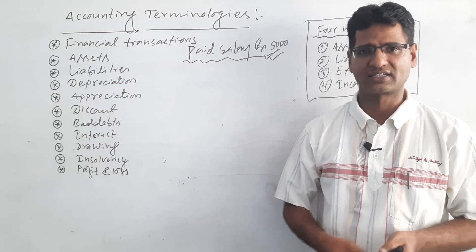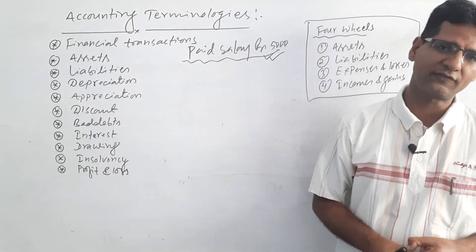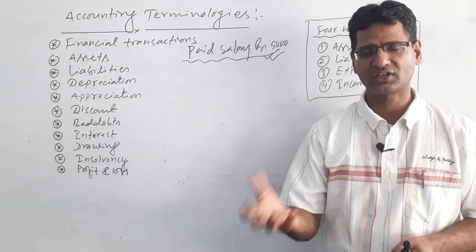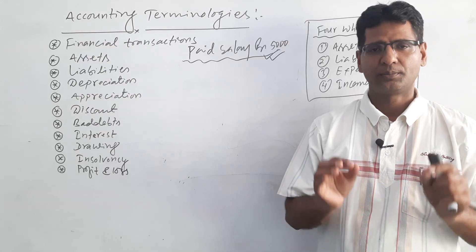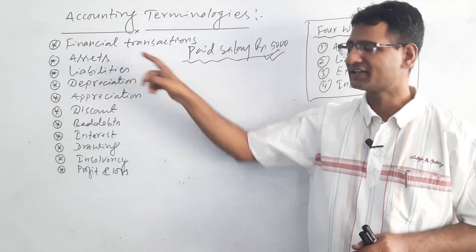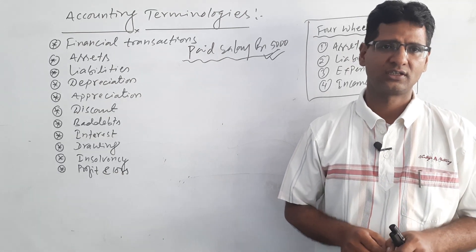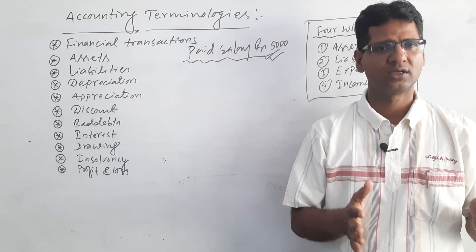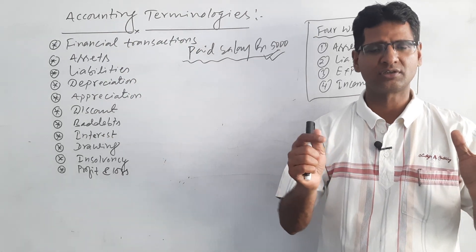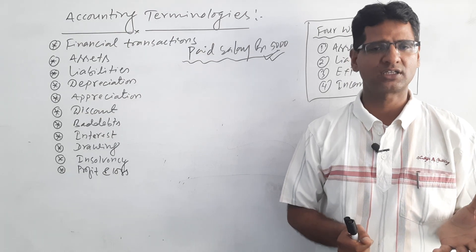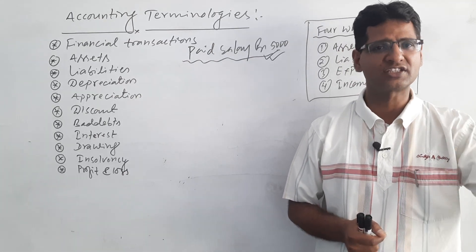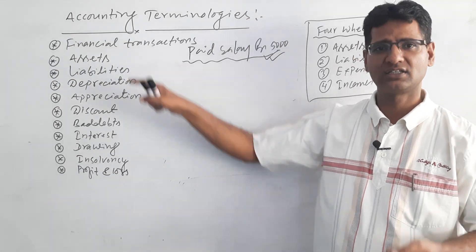The second term is assets. The objective of business is predetermined. There are two types of business: profit-oriented, and manufacturing or service-oriented. Both types of business need different types of assets. Assets are the properties or things which help to earn profits and process different types of raw materials in the business. Without assets, we cannot earn profits or convert raw materials into finished goods.